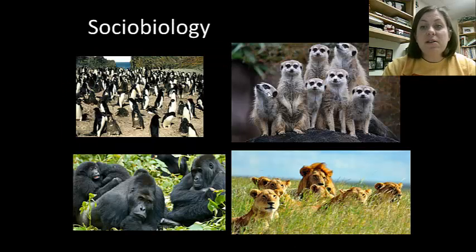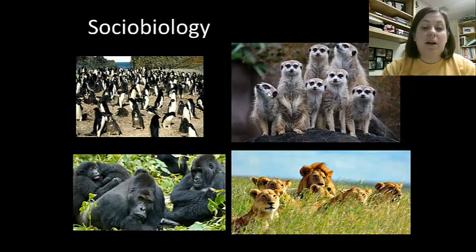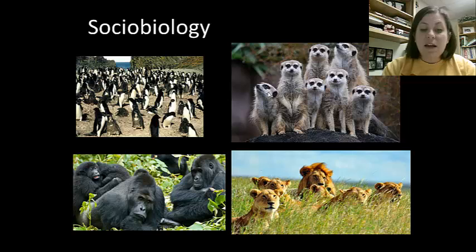This brings us to the topic of sociobiology. A society is a group of individuals — a population of the same species — that is organized in a cooperative manner. Some animals are social and live in groups, while others live solitarily and only join the opposite sex for reproductive purposes. Sociobiology is the study of the social behaviors and interactions between members of a group, which allows scientists to see the pros and cons of group living.